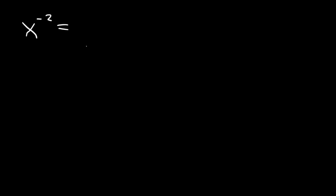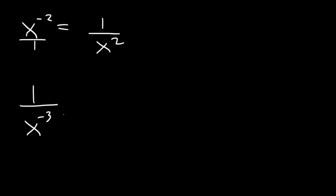Typically, whenever you want to simplify the expression, you want to get rid of all negative exponents and make sure all exponents are positive. All you need to do is change the position of x: if it's on the top, move it to the bottom. As you change the position, the sign is going to change — from negative 2 to positive 2. Similarly, if we have 1 over x to the minus 3, moving x from the bottom to the top changes the sign to positive 3.